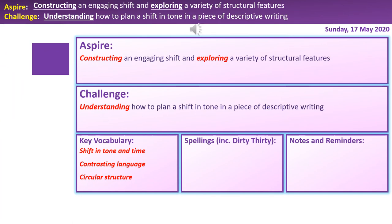So Year 10, this is our third lesson on Paper 1 Question 5. Last week we really focused on the first half of our description. Today's and tomorrow's lessons are going to focus on creating a shift in tone and time and contrasting our language in the second half of our writing and creating a circular structure, where paragraph six links back to paragraph one. Our challenge objective is to understand how to plan a shift in tone in a piece of descriptive writing, and our aspirational target is to construct an engaging shift and explore a variety of structural features — specifically a shift in tone and time, contrasting language, and circular structure.